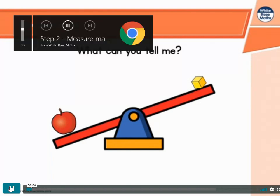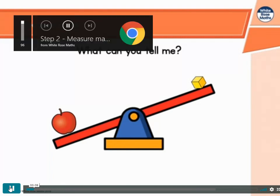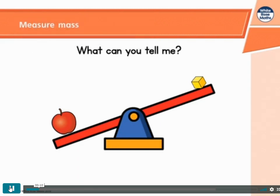Let's look at measuring mass. We can see a balance scale. Do you remember? What can you tell me? The apple is heavier than one cube. The apple weighs more than one cube. Did anyone think the cube weighs less than the apple?